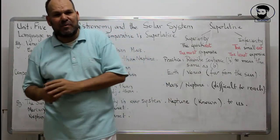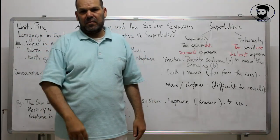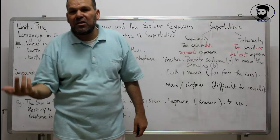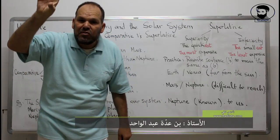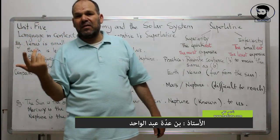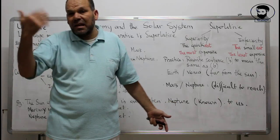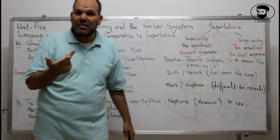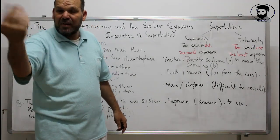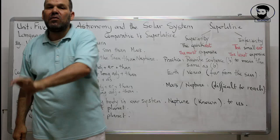For example, if you are given a text and asked a question like 'How far is Earth from the Sun?' or 'Among Earth and Venus, which one is farther from the Sun?' — you need to go to the text and find the answer. You may find a comparative or a superlative. For instance, the Sun is not like a planet: the Sun is a star, it gives light, while a planet only reflects light.